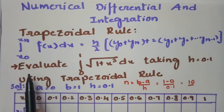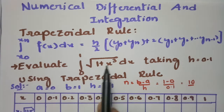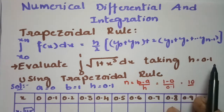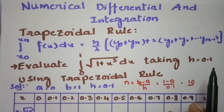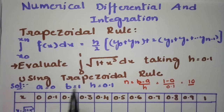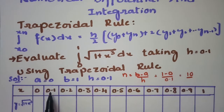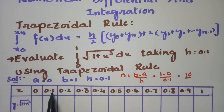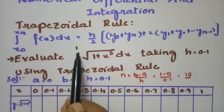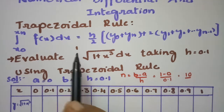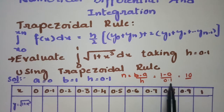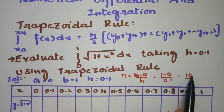We have to evaluate the integral from 0 to 1 of √(1+x³) dx, taking h equal to 0.1. Starting from x0 = 0, we keep adding h = 0.1 until we reach the upper limit of 1. The n value is (b − a)/h = (1 − 0)/0.1 = 10.